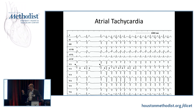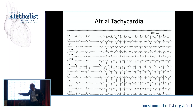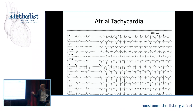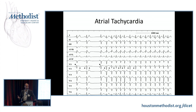Atrial tachycardia is usually focal in mechanism and doesn't care about AV conduction. You will see P waves, and it takes a little effort to discern them. The PR interval doesn't affect the tachycardia — when AV conduction does not affect the tachycardia, you have to think that AV conduction is irrelevant to it, which is most common in atrial tachycardias.